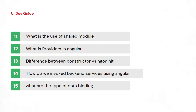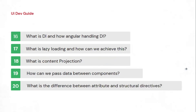The next question is about data binding — how many types we have. Common ones include property binding, interpolation, and event binding. They may ask how to set properties like src using property binding.